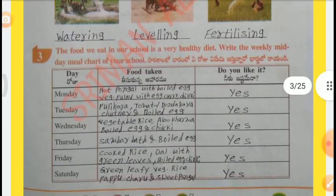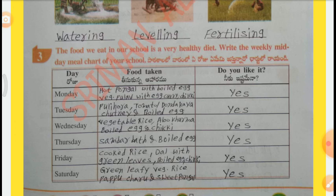Question 3: The food we eat in our school is a very healthy diet. Write the weekly midday meal chart of your school. Monday: Hot Pongal with boiled egg, Vegetable Pulao with egg curry, Chikki. Do you like it? Yes. Tuesday: Pulihora, Tomato or Dondakaya Chutney, and boiled egg. Do you like it? Yes.